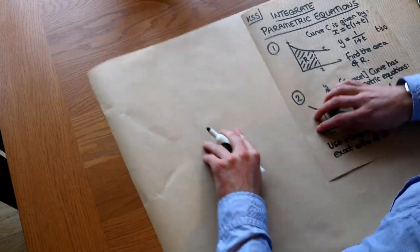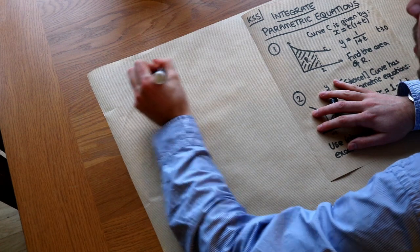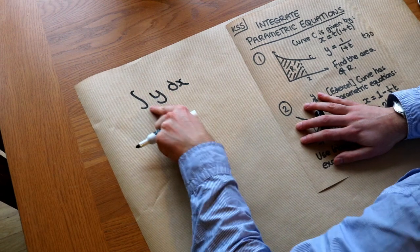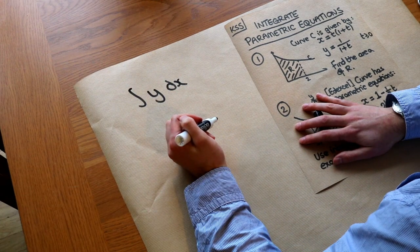Now we know how to integrate, usually we integrate the Y value with respect to X, and if we had some limits that would give us the area under the graph.